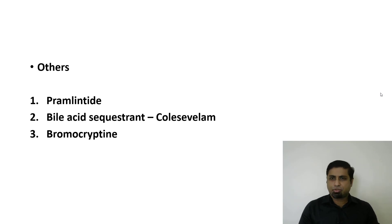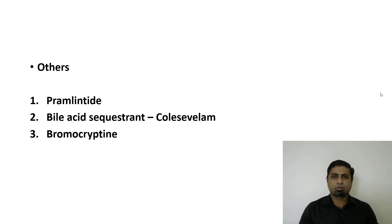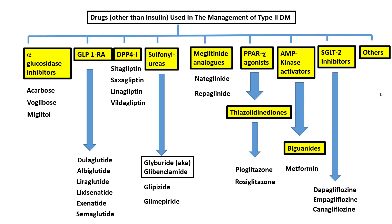Other drugs which can be used in type 2 diabetes mellitus other than insulin include pramlintide, bromocriptine, the bile acid sequestrant colesevelam, and others. These are not commonly used drugs. This concludes a brief overview of the drugs used in type 2 diabetes mellitus other than insulin.